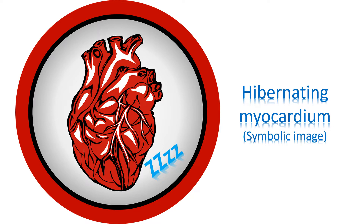There are two types of viable myocardium: stunned myocardium and hibernating myocardium. Stunned myocardium needs only time to recover, while hibernating myocardium needs restoration of blood supply. Stunned myocardium is a transient delay in recovery of the contractile function after restoration of blood supply, as occurs after an angioplasty for a heart attack.